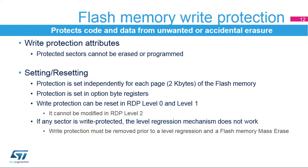The write protection protects code and non-volatile data from unwanted or accidental erasure, and is only available on the flash memory. The write protection can be set on a selection of flash memory sectors; there are 64 sectors of 2KB in STM32G0 microcontrollers. When a sector is protected, it cannot be erased or programmed, and any attempt to write to the sector will cause a flash memory error. If at least one sector is write protected, a mass erase of the flash memory cannot be performed — the protection needs to be removed first.